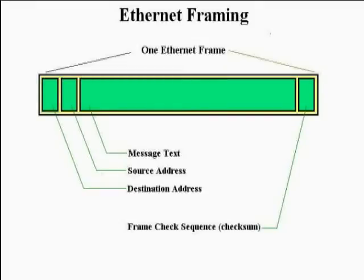Ethernet messages follow that same general format. A single Ethernet message is often called an Ethernet frame, and if any given Ethernet message is long and complex or represents a lot of information, that message is divided up into separate, short, individual frames. Each of those little frames follows the same general format. Within each Ethernet frame, the individual pieces are called fields.